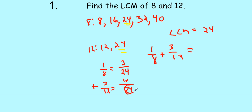We want to have the same size pieces, because if they're unlike fractions — like one-eighth and three-twelfths — we can't add them.